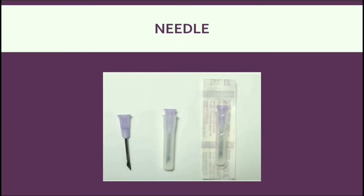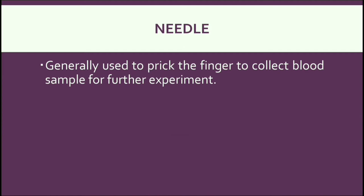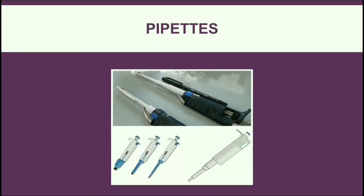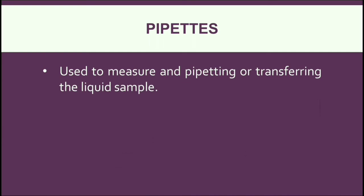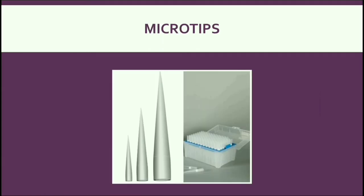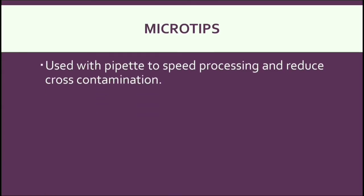Next, Needle. It's basically used to prick the finger to collect blood samples for further experiments. This is a Pipet. A pipet is a measuring tool commonly used in chemistry and biology labs. It's used to measure small volumes of liquid and also for pipetting or transferring liquid samples. Next, Microtips. These are used with a pipet to speed up processing and reduce cross-contamination. They are used only once to reduce the chance of contamination.